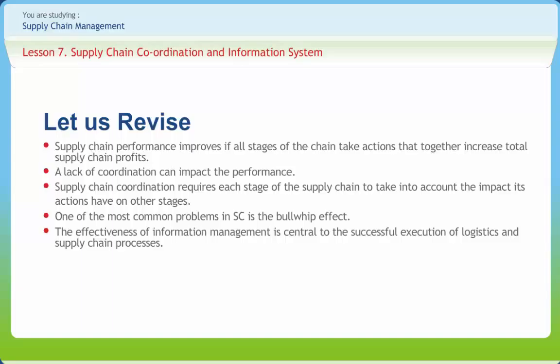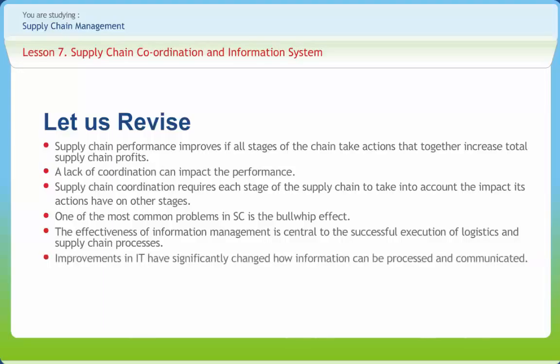Timely and accurate information is critical for businesses. Improvements in information technology have significantly changed how information can be processed and communicated. Some specific technologies have demonstrated widespread logistics applications. The quality of information depends on three factors: availability of information, accuracy of information, and the effectiveness of communication.